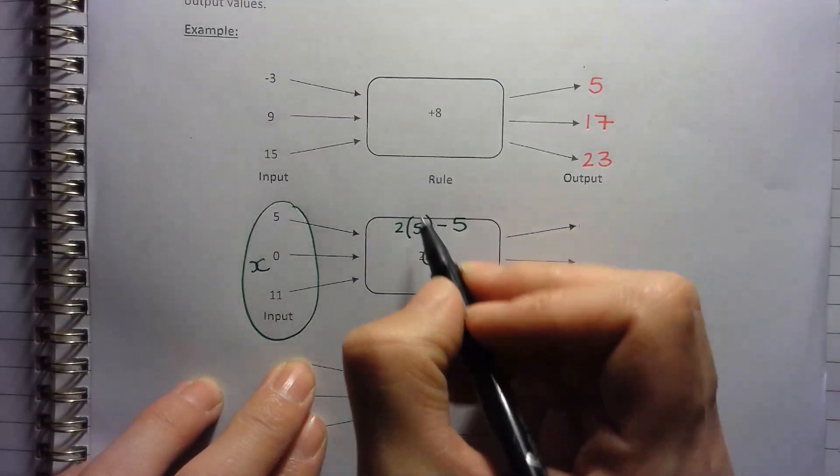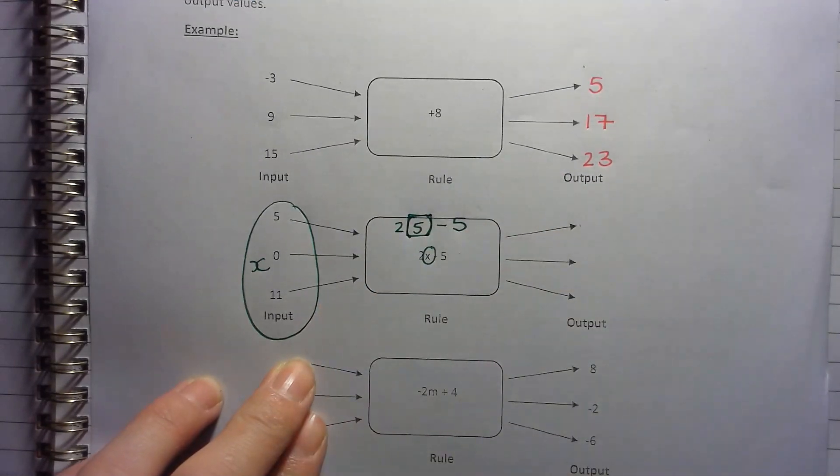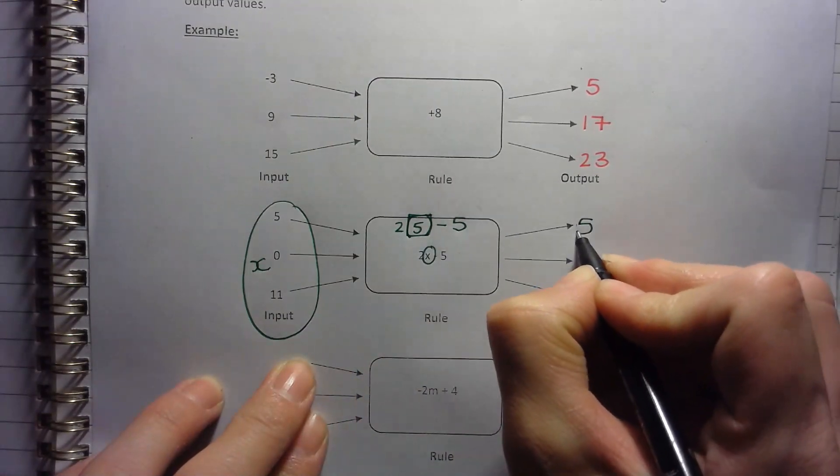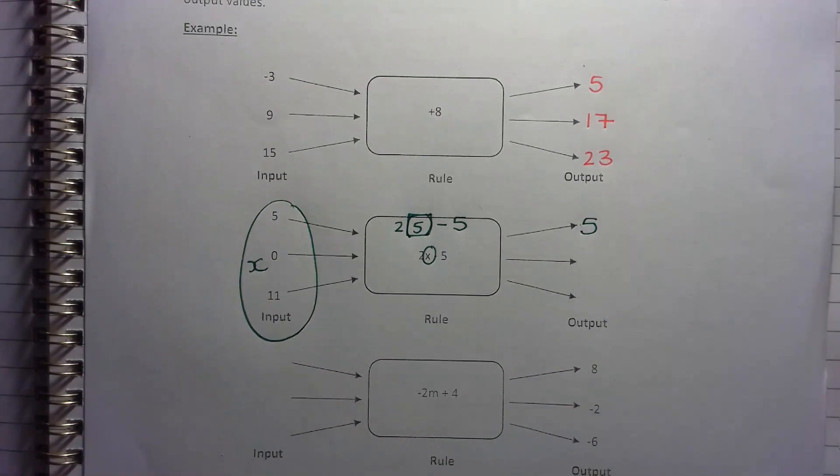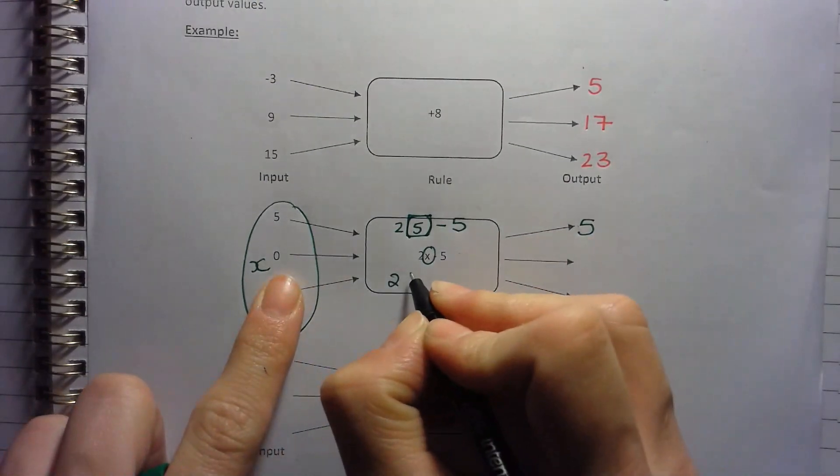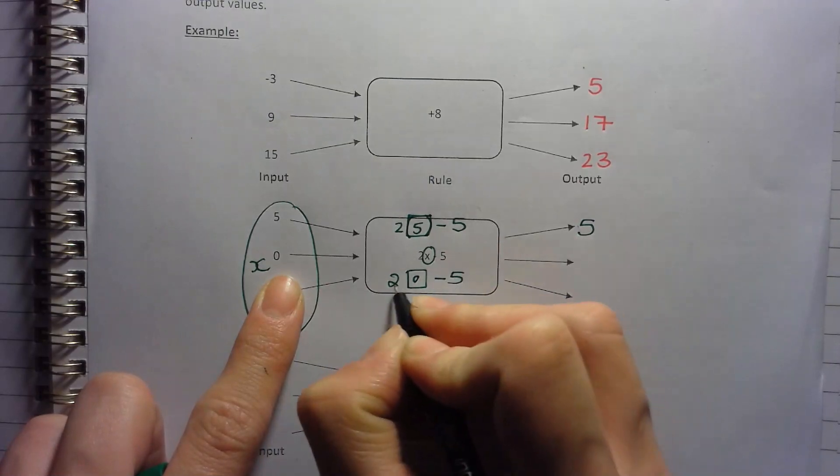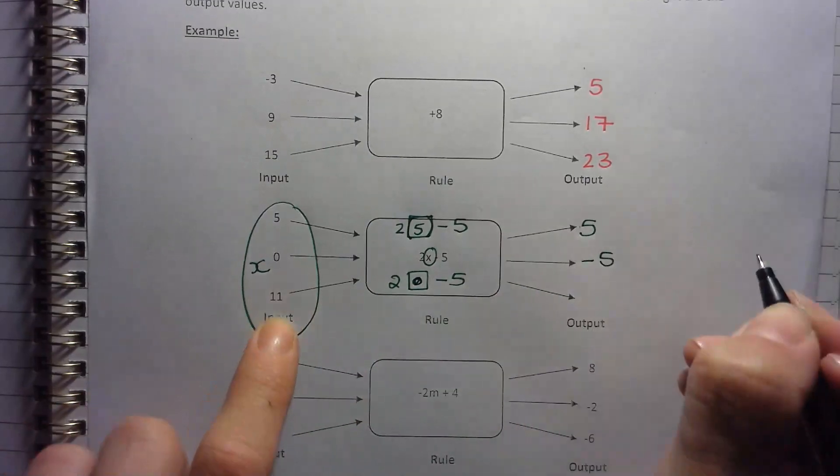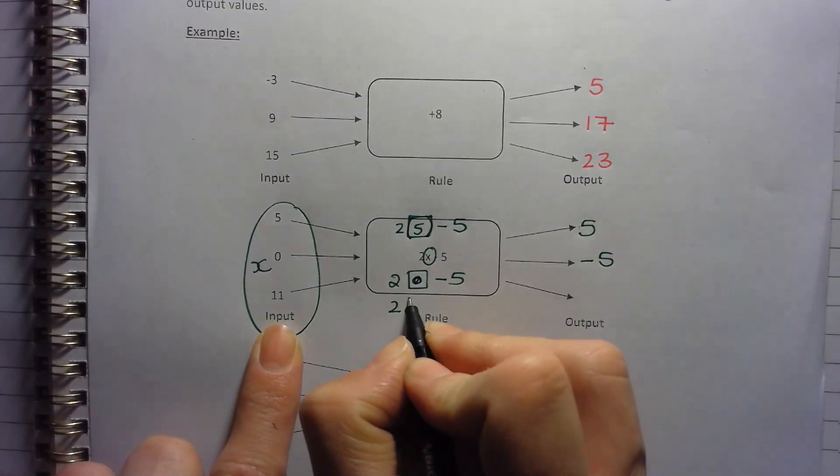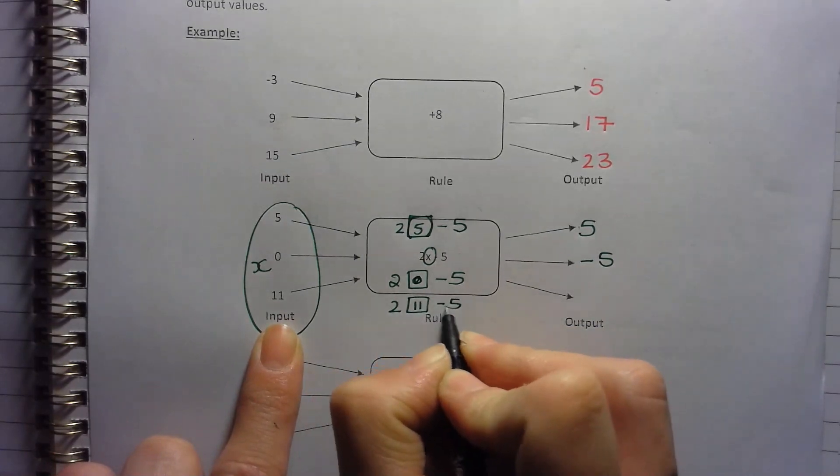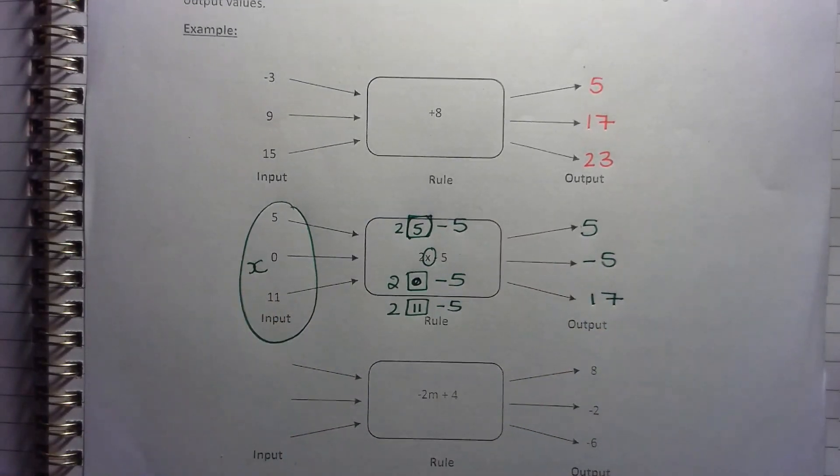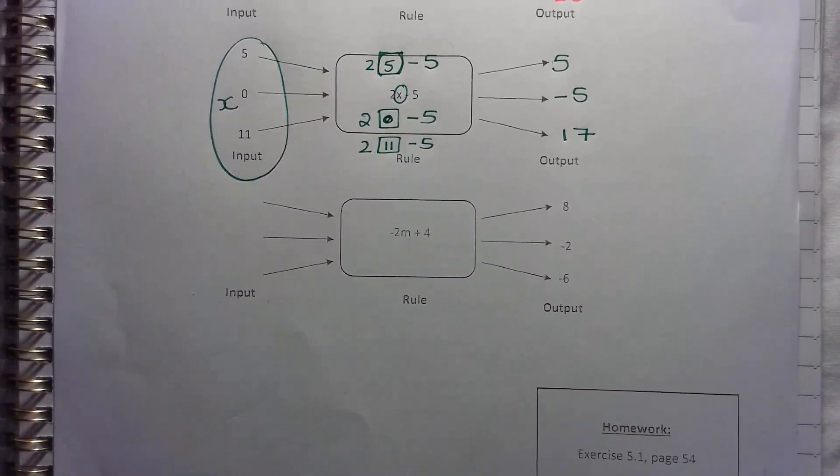So instead of the X, you're going to put a 5, just like you would have if it was a box like that. Alright, so 2 times 5 is 10, and I'm going to take away 5 is 5. Then for the next one, 2 times 0 minus 5. 2 times 0 is 0. Minus 5 is negative 5. Then 2 times 11 minus 5. That's 22 minus 5 is 17.